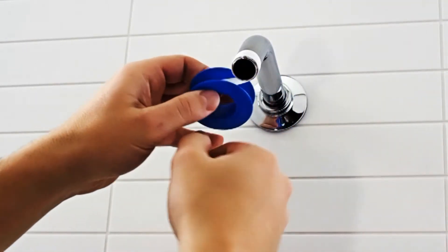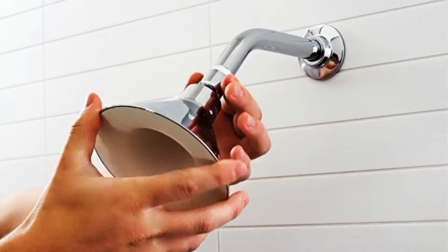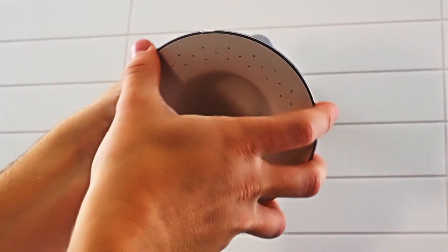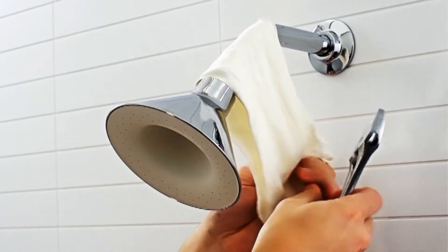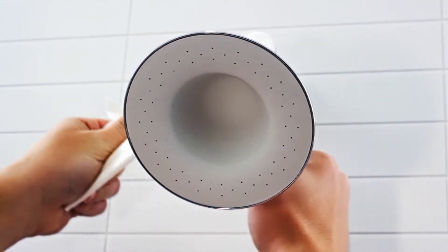Wrap new Teflon tape around the shower arm threads, then screw the Moxie shower head onto the shower arm by turning it clockwise. Place a cloth over the nut of the Moxie shower head and tighten the shower head with an adjustable wrench.